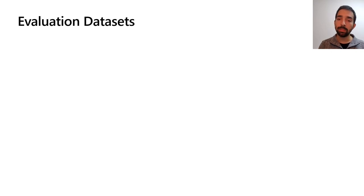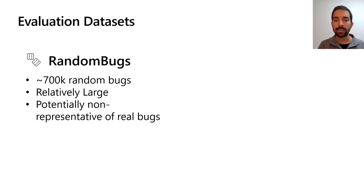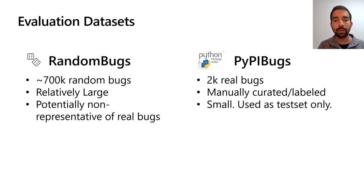We test a Python implementation of BugLab on two test sets. First, a test set of around 700,000 randomly generated bugs, and also, we create a small test set of around 2,000 real-life bugs, found on projects on the Python package index, called PyPyBugs.